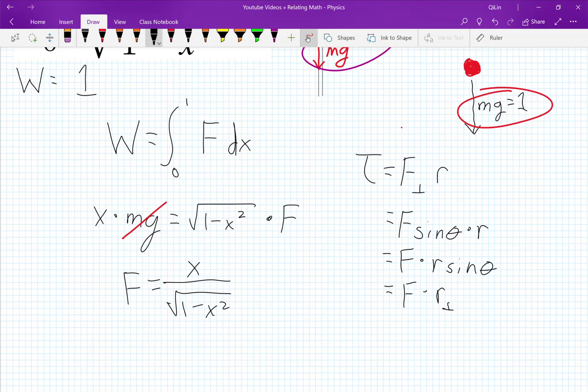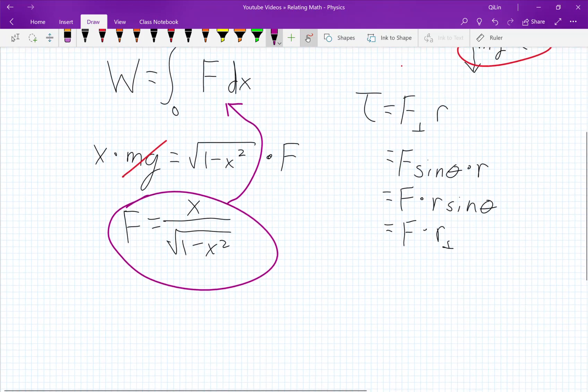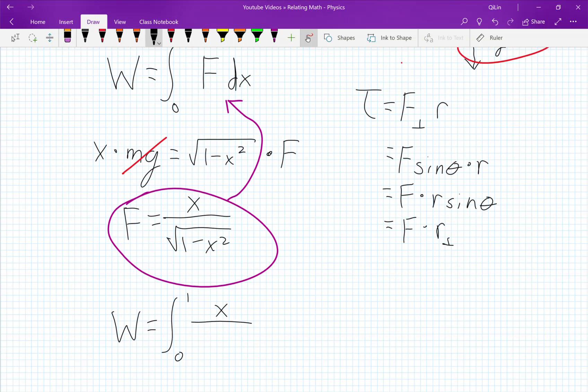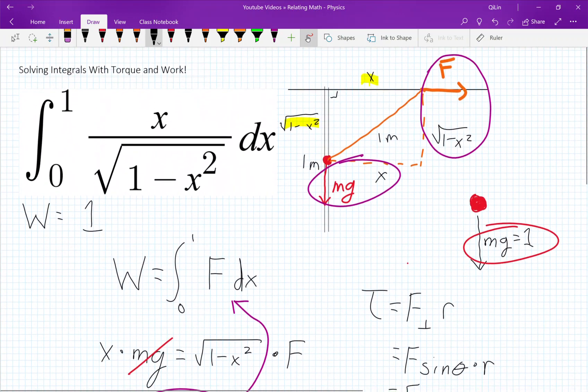And we can substitute that into our original work equation here. And that will give us the work equals the integral from 0 to 1 of x over the square root of 1 minus x squared dx. And the total work done is just 1 because we calculated that earlier.